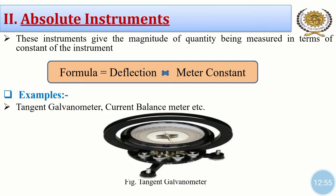Now the second type of electronic instrument is absolute instruments. These instruments give the magnitude of the quantity being measured in terms of the constant of the instrument. The formula for this is: deflection of meter multiplied by meter constant. In absolute instruments, all meters have some meter constant. Examples of absolute instruments are tangent galvanometer, current balance meter, etc. The figure shows a tangent galvanometer, in which the reading is given by the deflection of the pointer and some meter constant.